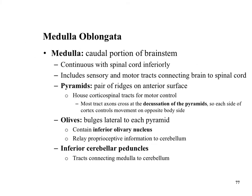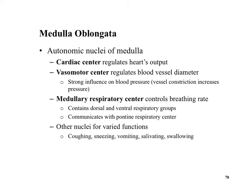The medulla is the caudal, lower part of the brain stem and is continuous with the spinal cord. It has pyramids — a pair of ridges on the anterior surface — which are important for the tracks of neurons passing through the spinal cord. There are also lateral bulges called olives and inferior cerebellar peduncles connecting the medulla to the cerebellum.